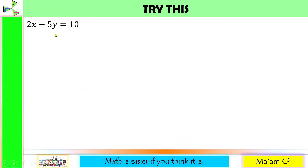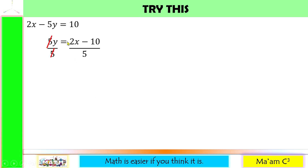Try this: 2x minus 5y is equal to 10. Let us isolate y and make it positive, giving us 5y is equal to 2x minus 10. Dividing both sides by 5, the 5s cancel out, leaving y is equal to 2 over 5 of x minus 2. We have an equal sign, we have x and y, and our y is already defined. When you substitute any value for x, you will get a unique value of y. Therefore, this equation is a function.